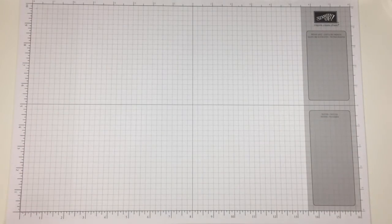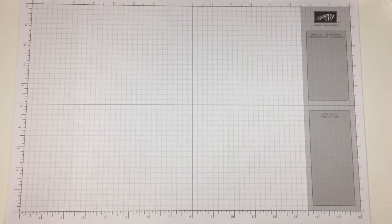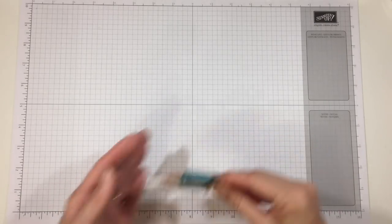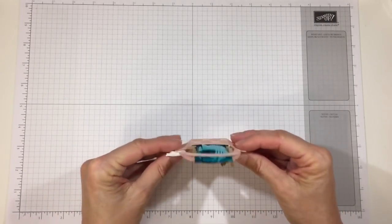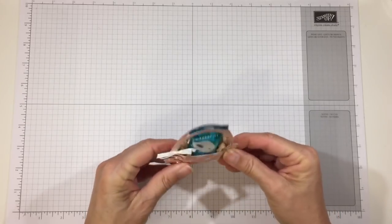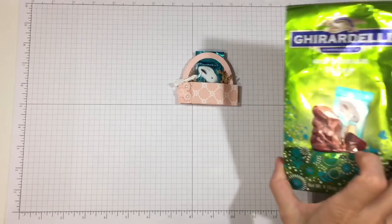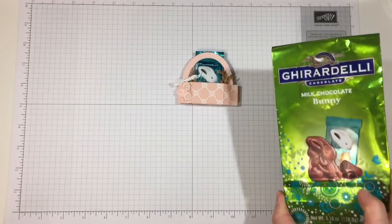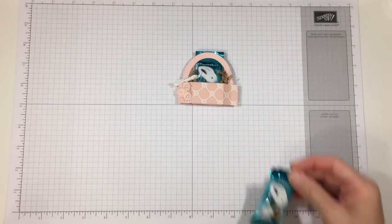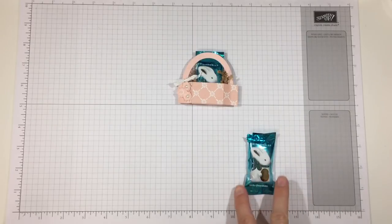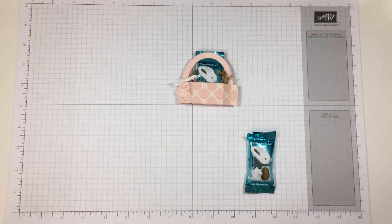Hi everybody, it's Darby with rejoiceandcreate.com and I have a little project for you today for Easter. It's this adorable little bunny basket and it was made for a Ghirardelli mini chocolate bunny. Now the bunny themselves are about three inches long by about an inch and a half wide, and there are other chocolates on the market which would fit in that space as well.